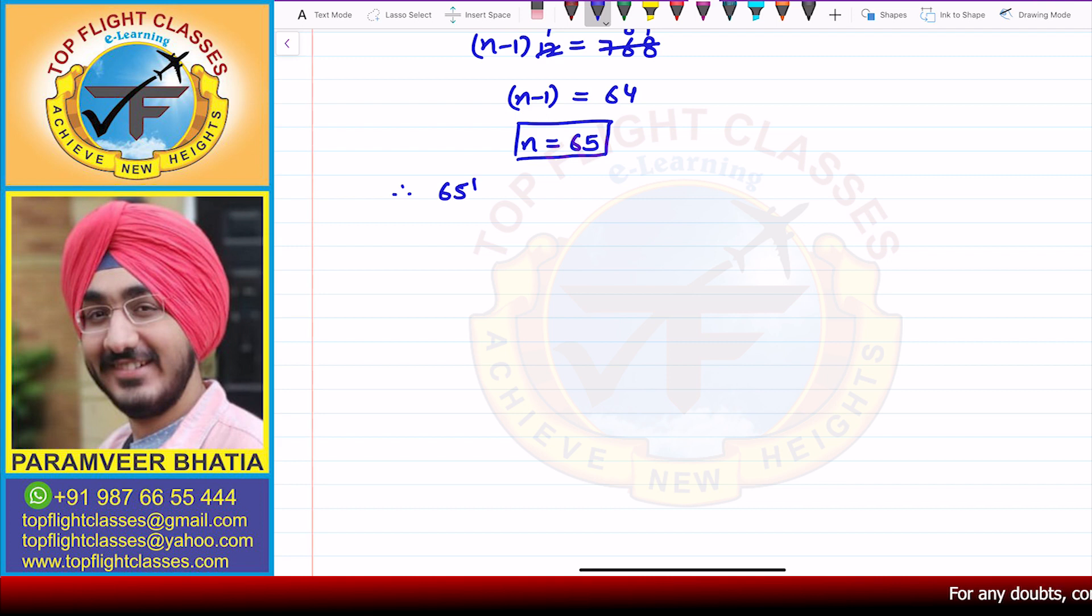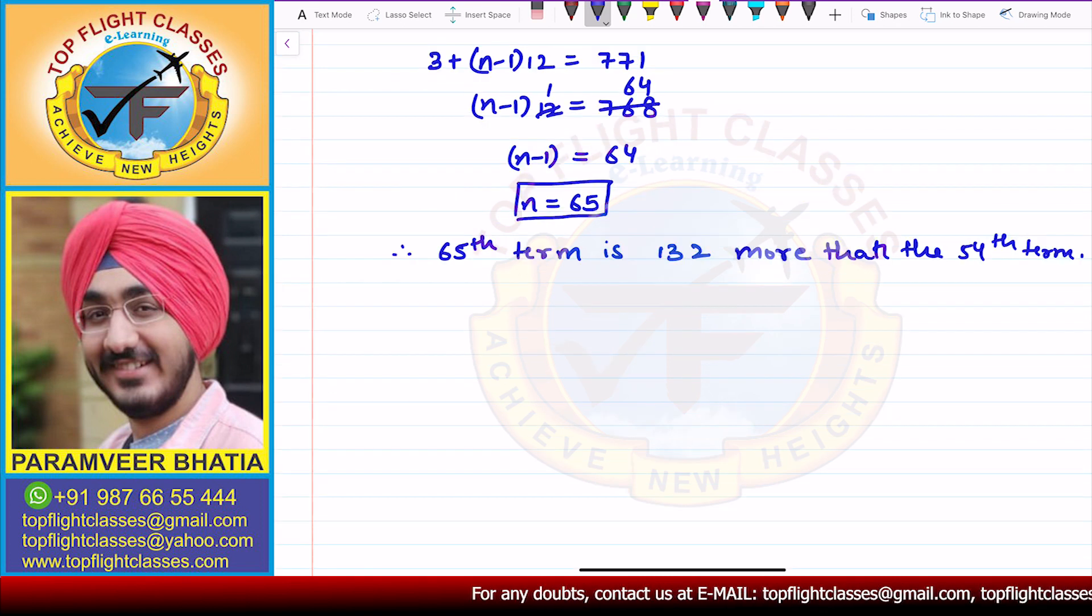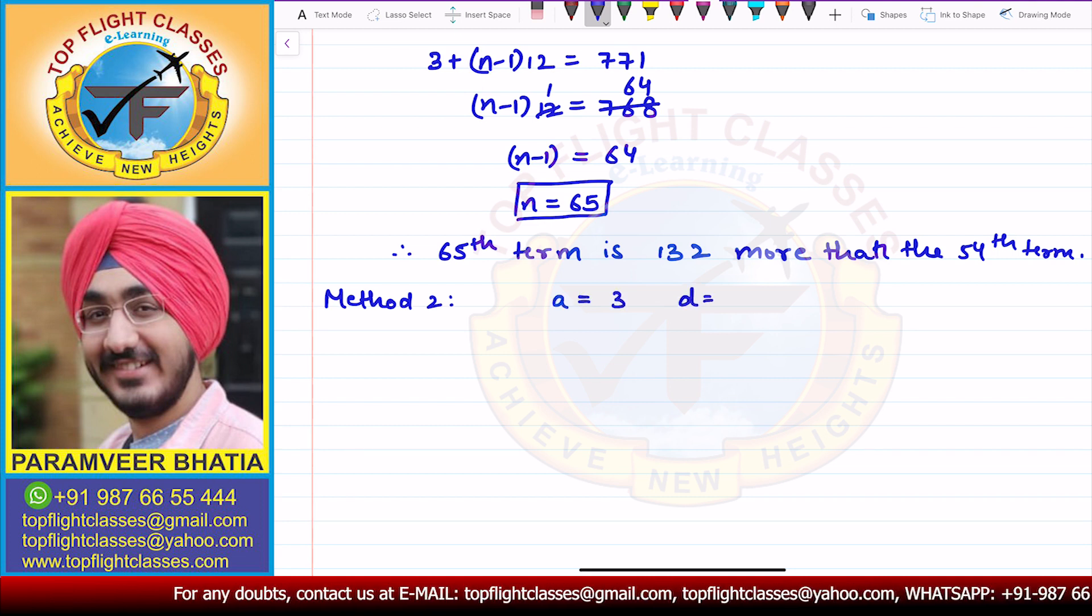Therefore, the 65th term is 132 more than the 54th term. Now, Method 2: A is 3, D is 12.